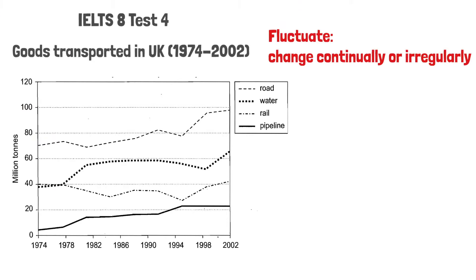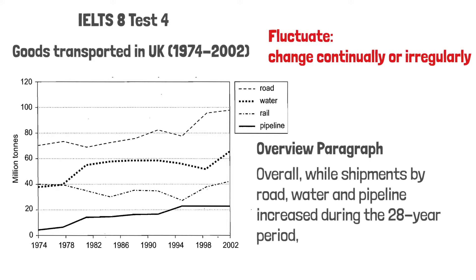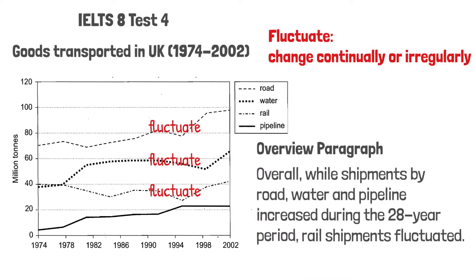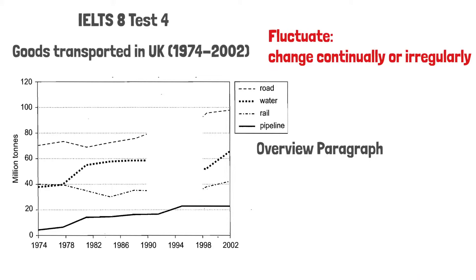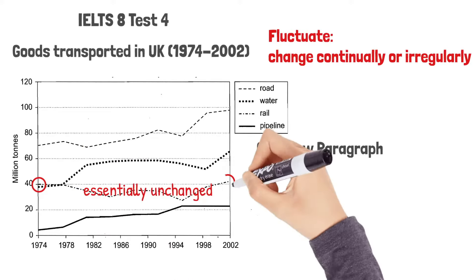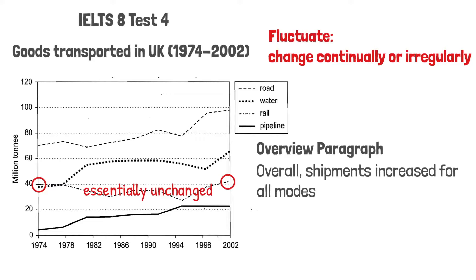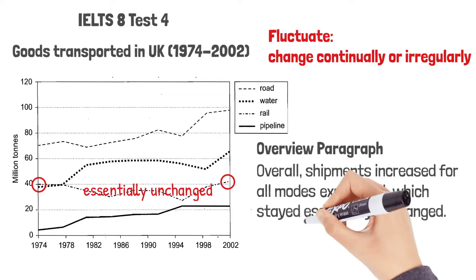Let me give you another example. This graph shows goods transported in the UK. Some IELTS gurus teach students to write the overview like this: 'Overall, while shipments by road, water and pipeline increased during the 28-year period, rail shipments fluctuated.' Yes, rail shipments fluctuated, but I can argue that road and water shipments also fluctuated. So I don't think it's a good idea to use fluctuate to describe rail. It would be much better to say that rail shipments were essentially unchanged — there were fluctuations, but in essence they didn't change. Shipments increased for all modes except rail, which stayed essentially unchanged.